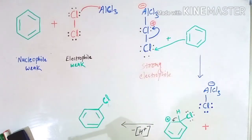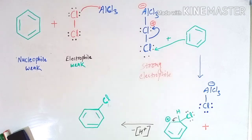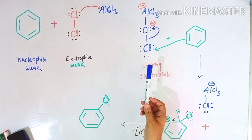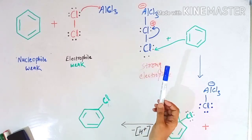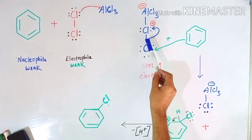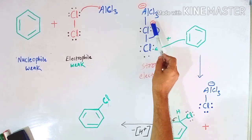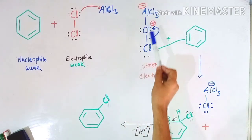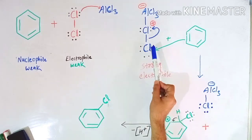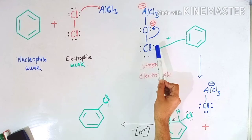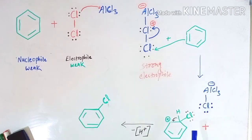As a positive charge develops on the chlorine, it becomes a strong electrophile — because electrophiles usually carry a positive charge and they are seeking electrons. To neutralize this positive charge, the bond between the two chlorine atoms breaks apart, and the electrons of that bond shift to neutralize the positive charge. So AlCl4⁻ forms, and the chlorine species with a positive charge is now ready to attack the benzene molecule.